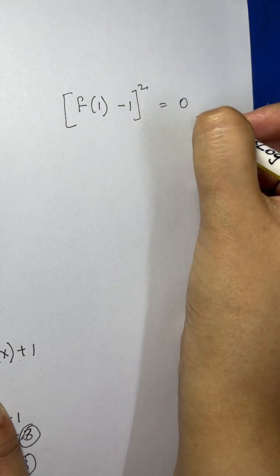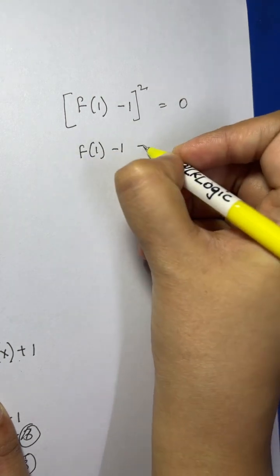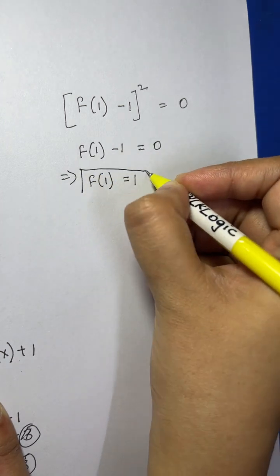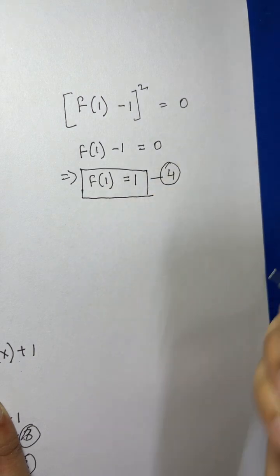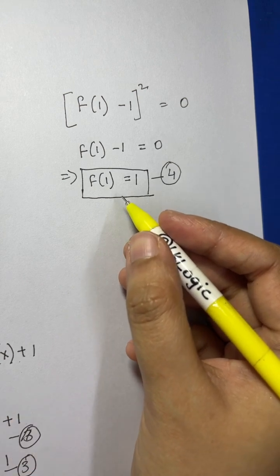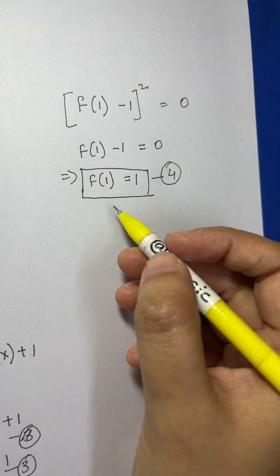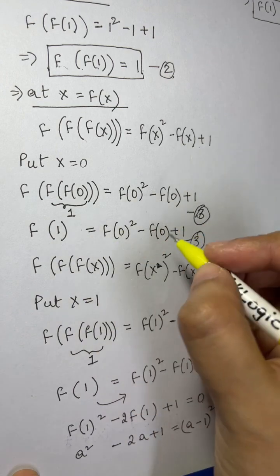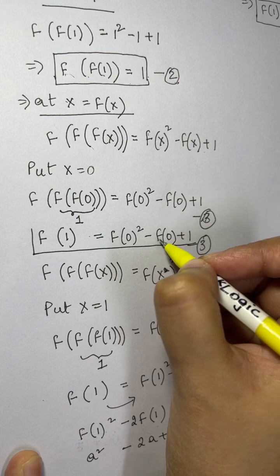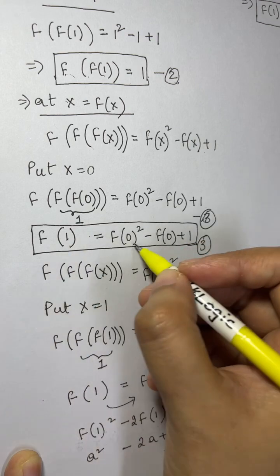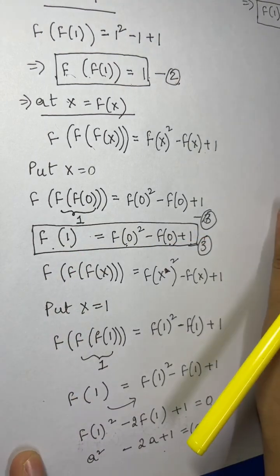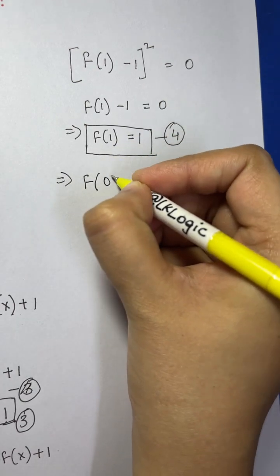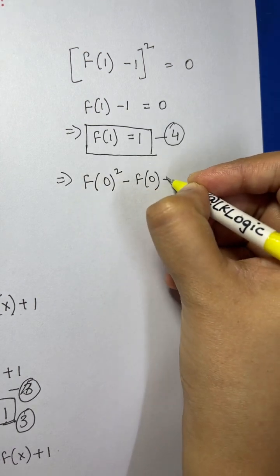From [f(1) - 1]² = 0, we get f(1) - 1 = 0, so f(1) = 1. Let this be Equation 4. Now from Equation 3, f(1) = [f(0)]² - f(0) + 1, and we substitute f(1) = 1 to get [f(0)]² - f(0) + 1 = 1.